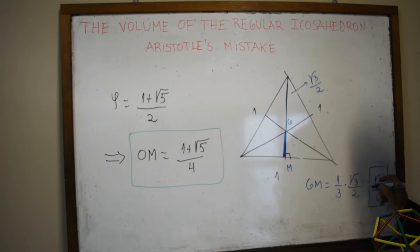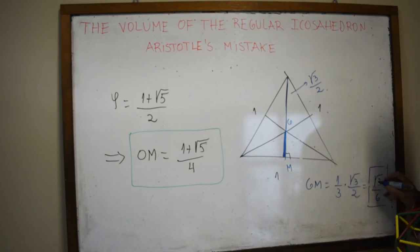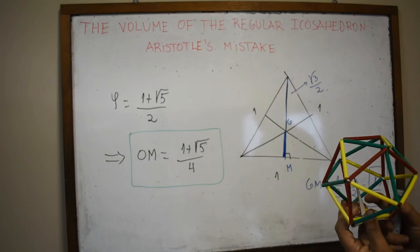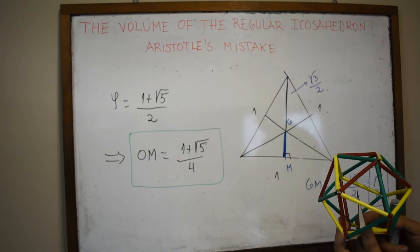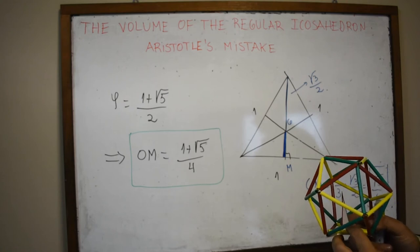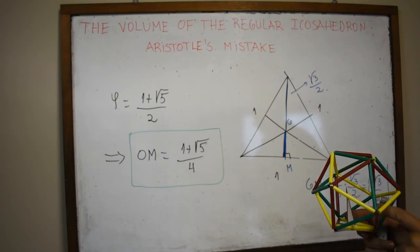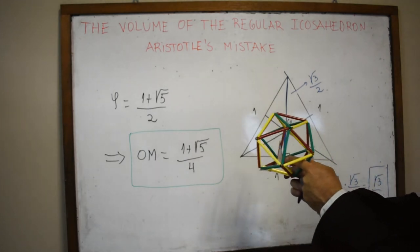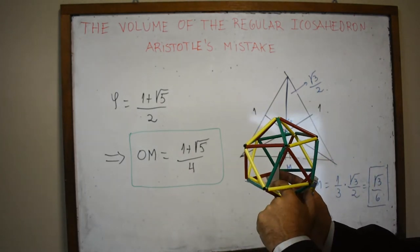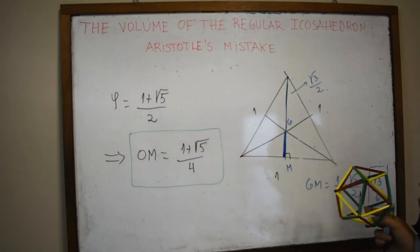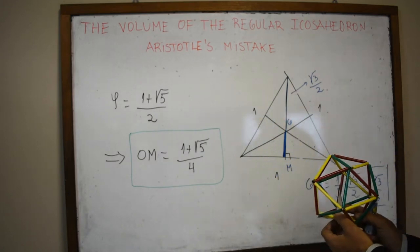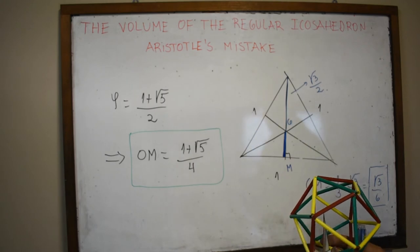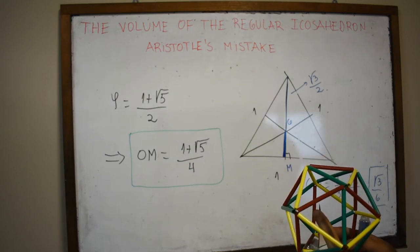Now we have the elements to find the height of the tetrahedron. In a right triangle, we have the hypotenuse OM = (1 + √5) / 4 and the leg GM = √3 / 6. By the Pythagorean theorem, we are going to solve for OG.